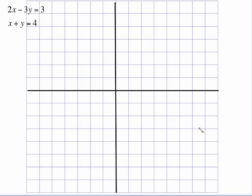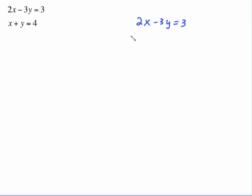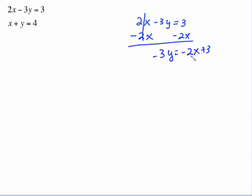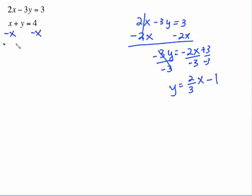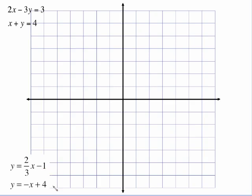Another one like that — this is not in the correct form, so we're going to have to do the work to get it in the right form. Subtract 2x from both sides, giving negative 3y equals negative 2x plus 3. Finish solving by dividing everything by negative 3, giving y equals two-thirds x minus 1. The other equation is pretty simple — just subtract x from both sides and we get y equals negative x plus 4. So those are the two equations: two-thirds x minus 1 and negative x plus 4.